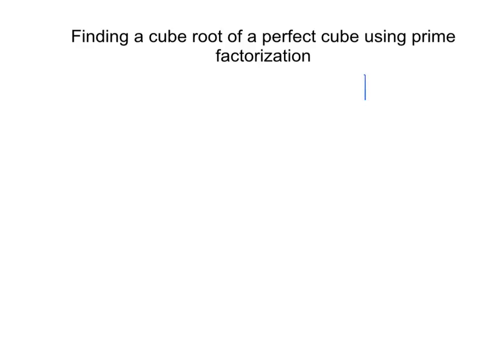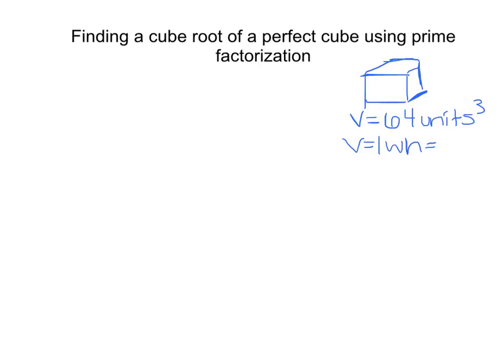Let's say we have a cube and the volume is 64 units cubed. We want to find out one of our side lengths — what number, when multiplied by itself three times, gives us the volume. Because volume is length times width times height, and those are all the same in a cube, we just have our side length cubed. So we need to figure out what number multiplied by itself three times is going to give me 64.